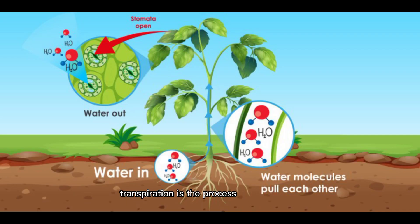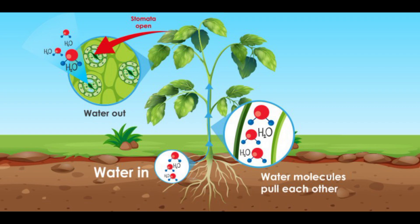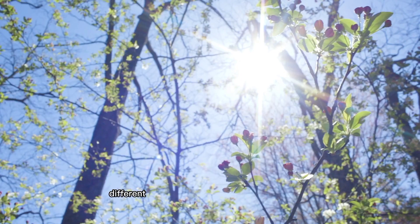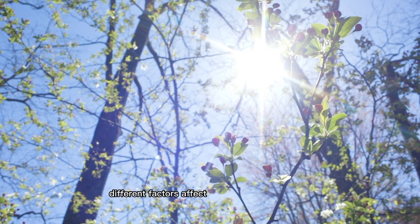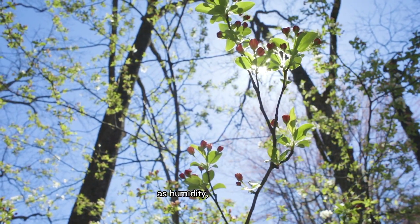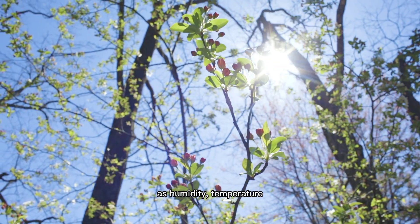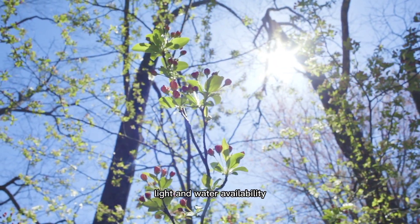Transpiration is the process of discharging excessive water from plants in the shape of vapors. Different factors affect the rate of transpiration, such as humidity, temperature, light, and water availability.